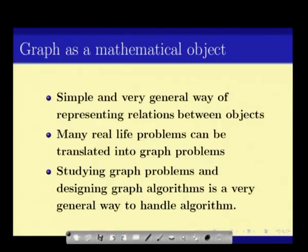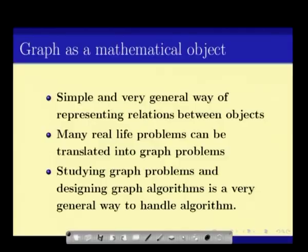We have also looked at graphs as a mathematical object. Graphs are very simple and very general mathematical objects that help us represent relationships between objects. We had vertices and edges, where edges connect vertices that are related. Under this simple definition, we saw that many real-life problems can be translated into graph problems, and thus studying graph problems is a very important part of algorithms.